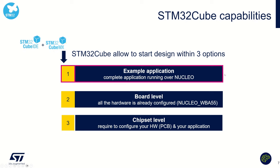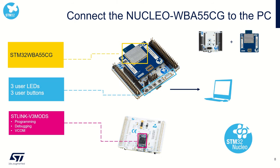In this case, it's a complete application running on the Nucleo board — the BLE peer-to-peer server. How does connecting a Nucleo board to your PC work? The Nucleo consists of a mezzanine board plus a daughter board. The daughter board has the WBA55 on it with antenna and all required discrete components. On the mezzanine board, we have some LEDs and buttons: three user buttons B1, B2, B3, a reset button, and LEDs that we will use for this session.